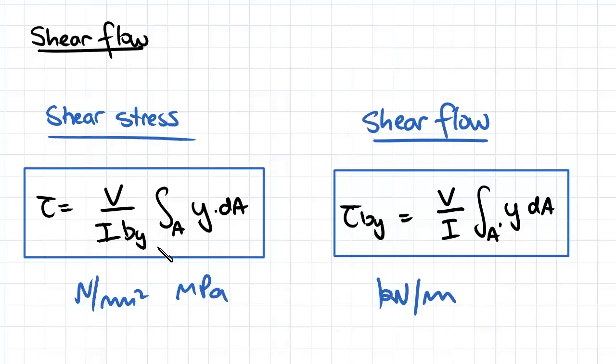So shear stress is going to have a discontinuous distribution when we're looking at a cross-section which varies in width. But anyway, guys, we'll be looking at this in more detail in the coming videos. So I'll see you guys in the next video.